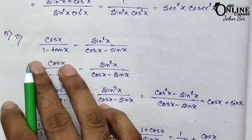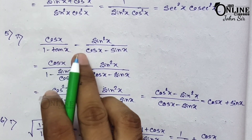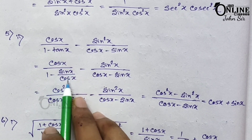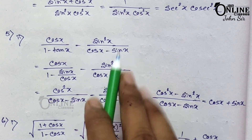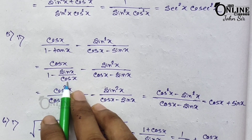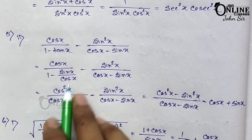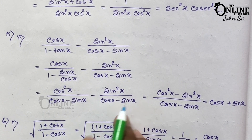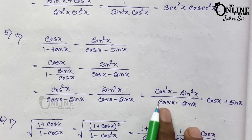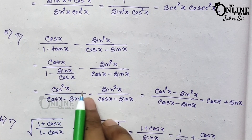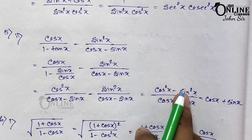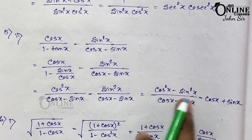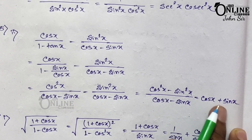Sum number 5.2: cos x/(1 − tan x) − sin²x/(cos x − sin x). Change tan x to sin x/cos x. The LCM is cos x, so the numerator becomes cos²x, giving cos²x/(cos x − sin x) − sin²x/(cos x − sin x). Both denominators are the same, so numerator is cos²x − sin²x. Applying a² − b² = (a+b)(a−b), the (cos x − sin x) cancels, giving final answer cos x + sin x.